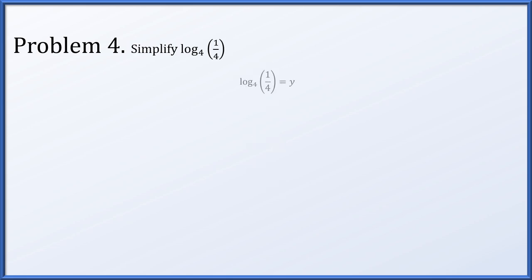Problem four: simplify the log base 4 of 1 over 4. We set our expression equal to y and convert it to its equivalent exponential form. Since 1 over 4 is 4 to the minus 1, and 4 to the y equals 4 to the minus 1, y must equal negative 1.